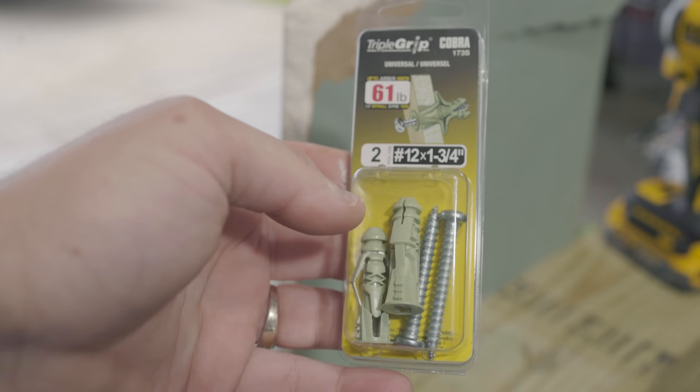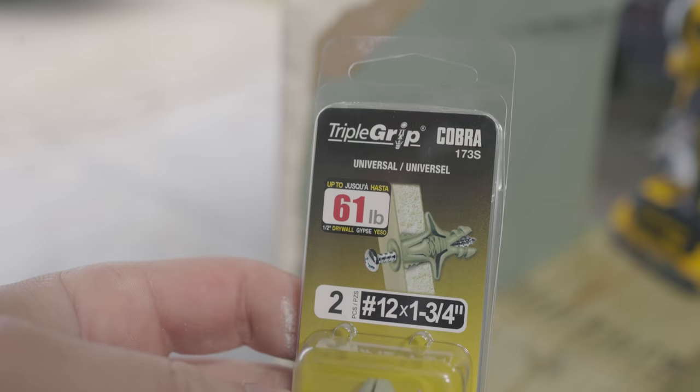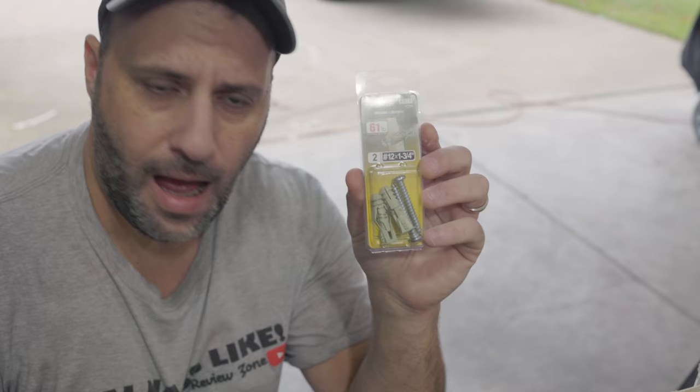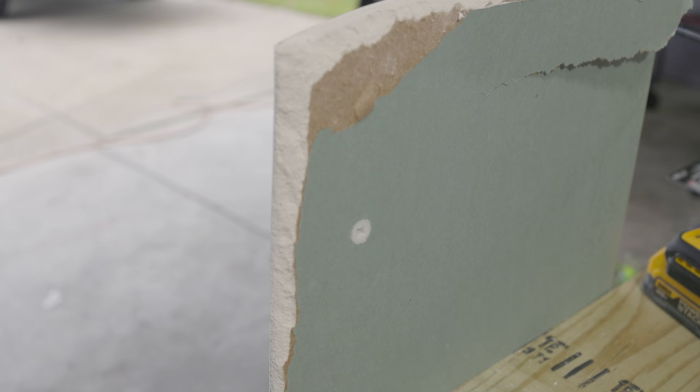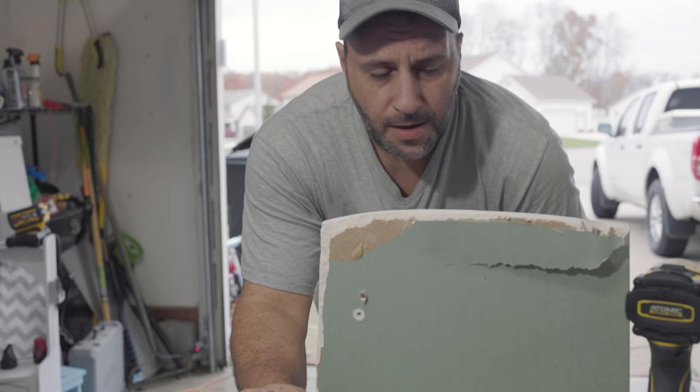Now this one here is your conventional style of anchor. This one's from triple grip and 61 pounds. Again, you can buy bigger or smaller depending on the weight limit you're looking at. My problem with these type of anchors is that you always have to drill a hole for them. Not to mention if your hole is too small, you have to find a bigger bit, drill it bigger, or if your hole is too big, these just won't work.